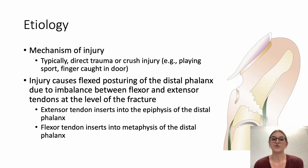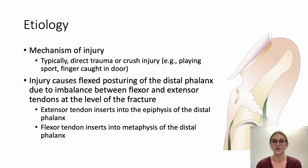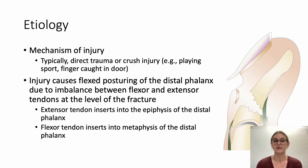Most commonly, these injuries occur as a result of direct trauma or crush injuries — for example, children playing sport or having their finger caught in a door. The injury causes a characteristic flexed posturing of the distal phalanx, ultimately due to an imbalance between the flexor and extensor tendons at the level of the fracture. The extensor tendon inserts into the epiphysis of the distal phalanx, while the flexor tendon inserts into the metaphysis, so the flexor tendon overrides the extensor tendon, resulting in this characteristic flexed posturing.